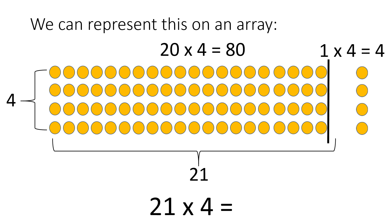80 plus 4 is equal to 84. So, 21 times 4 is equal to 84.